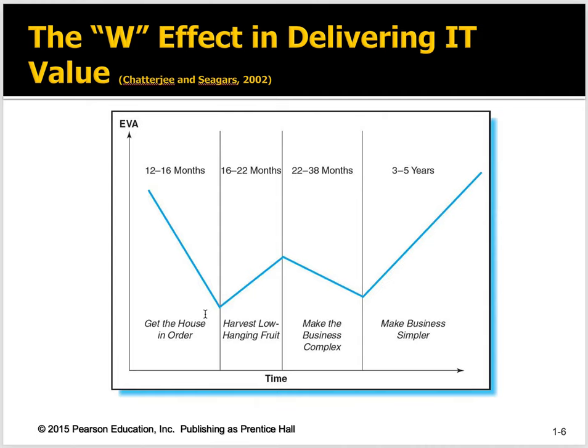They describe this as a W effect for delivering IT value — this is economic value added, which you can look up on Investopedia. First, you're doing some cleanup, getting your house in order. If we're talking about something like SAP or Oracle, a very large computer system, it takes 12 to 16 months to get your house in order and get it implemented. Then your value starts to increase, hopefully, as you harvest the low-hanging fruit — in the next year or so.